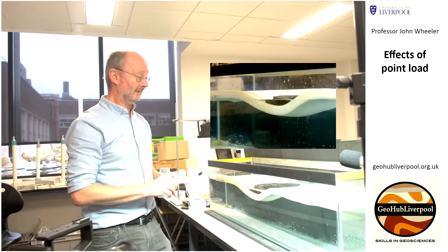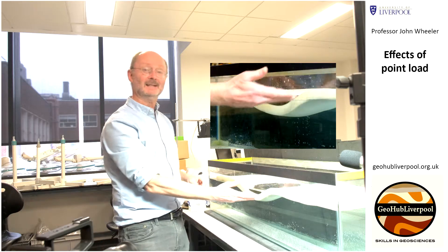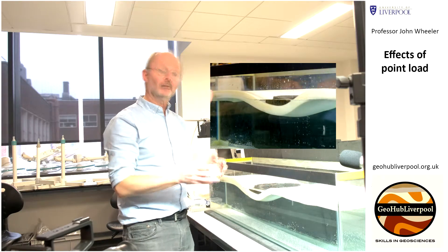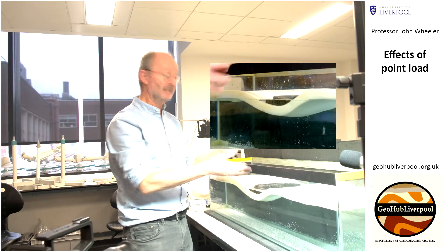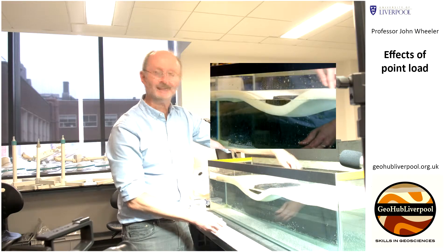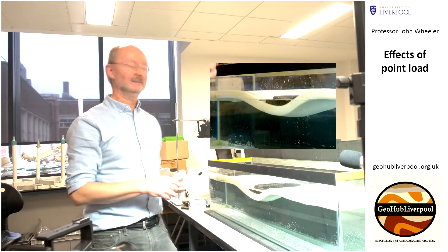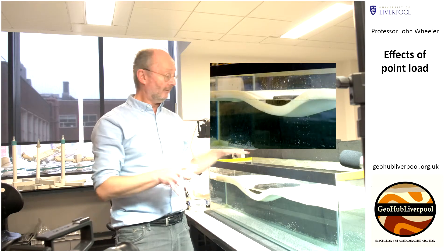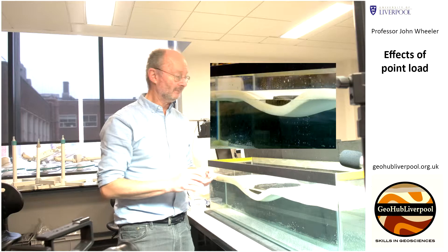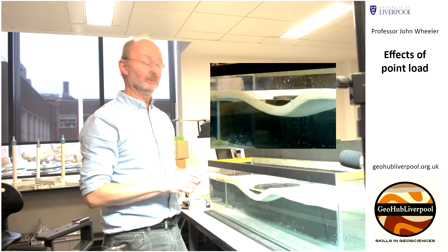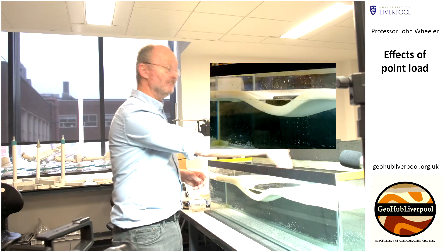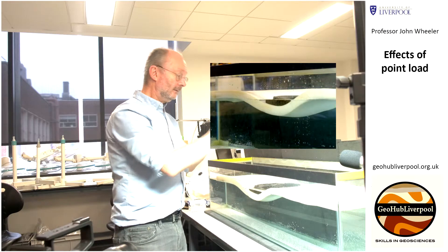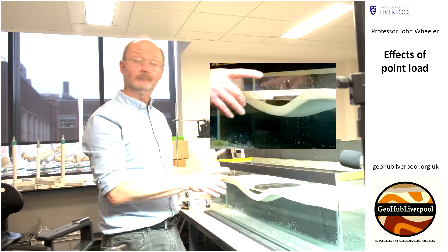This is what we find in real mountain belts — you actually find a depressed area nearby. That depressed area could be flooded by the sea, or it could receive input from rivers and sediment can build up there. If I had some sand I could throw it in here, illustrating the development of a foreland basin. Around the Alps today, the Alps are above sea level, but if you were in Geneva maybe 30 to 50 million years ago, it would have been below sea level for this reason. This sort of idea helps us explain the real world.